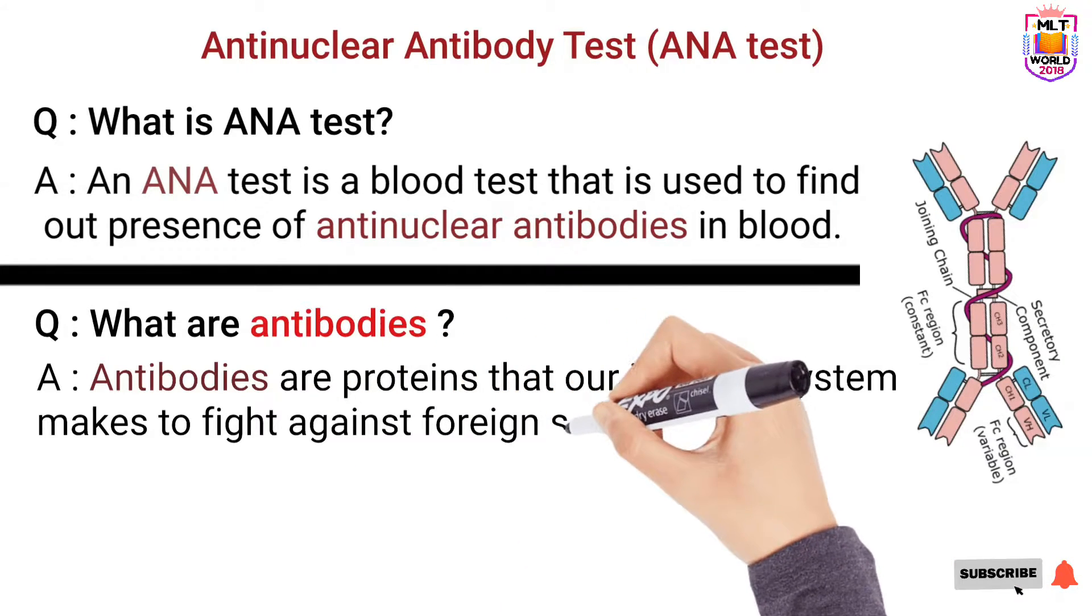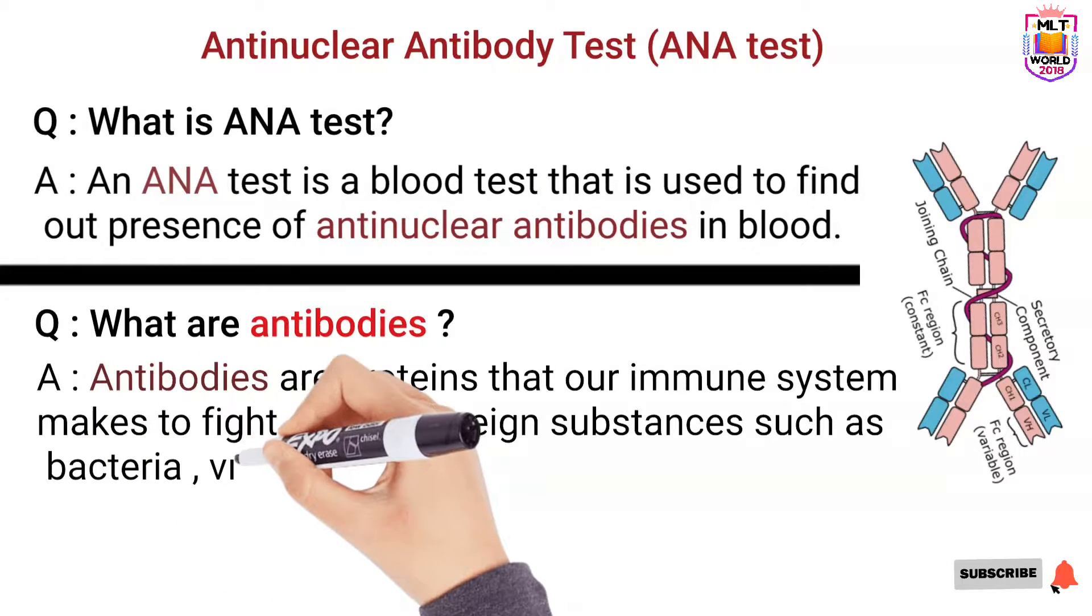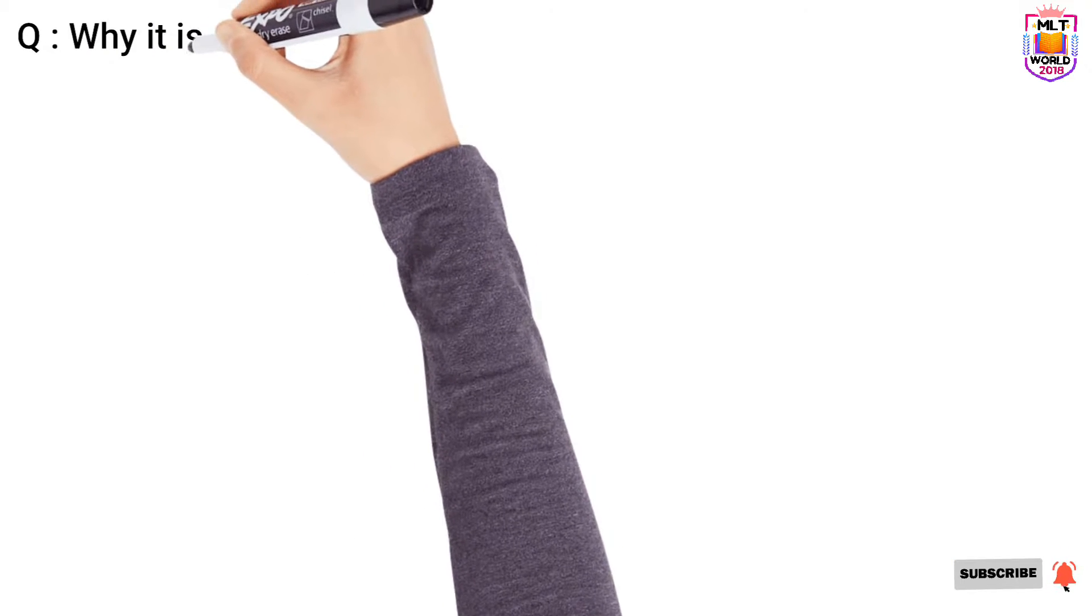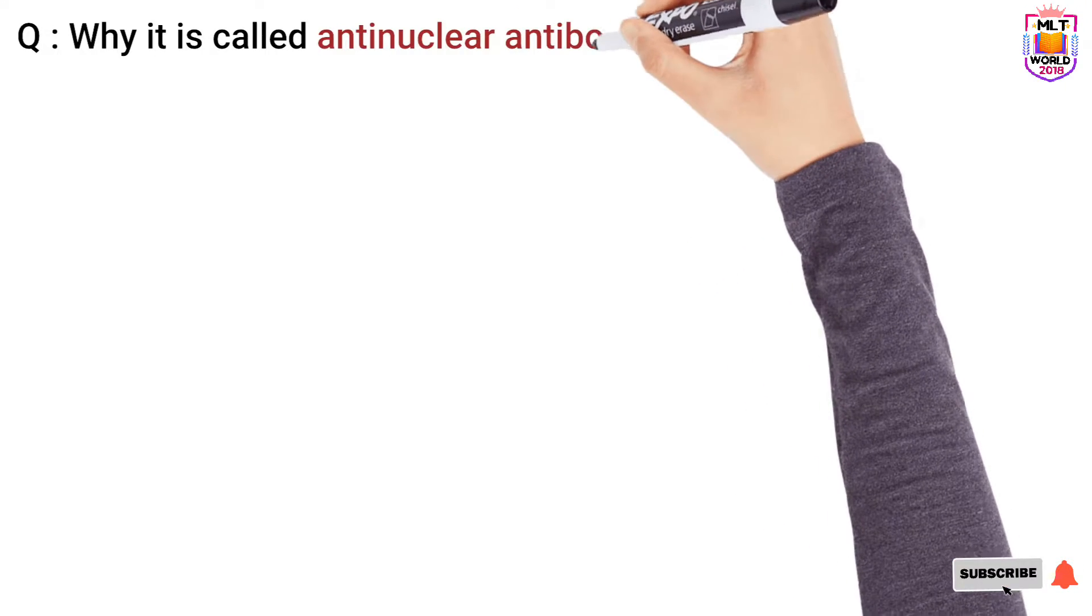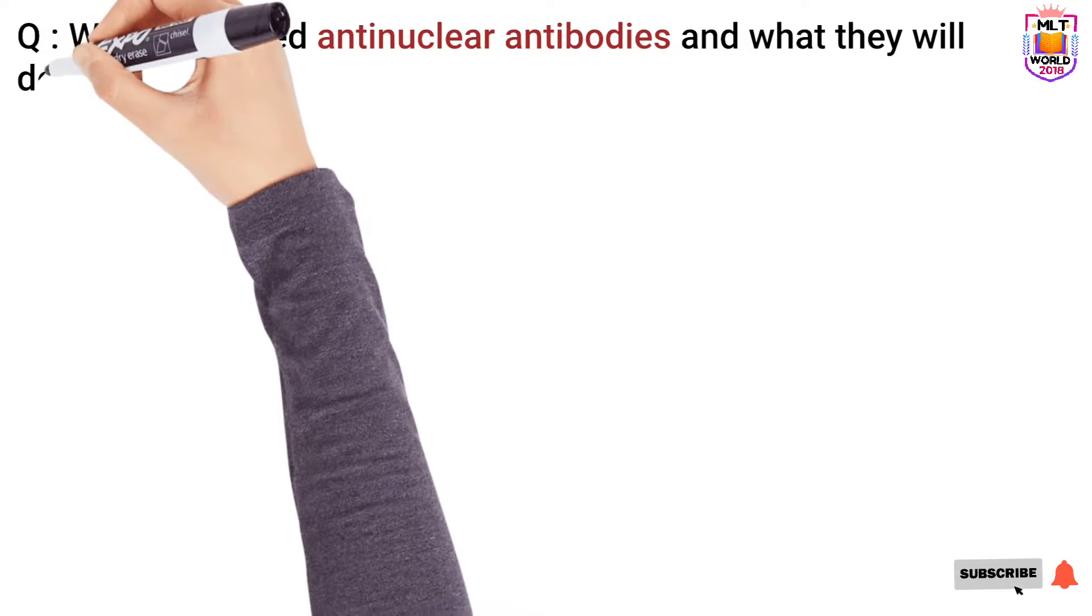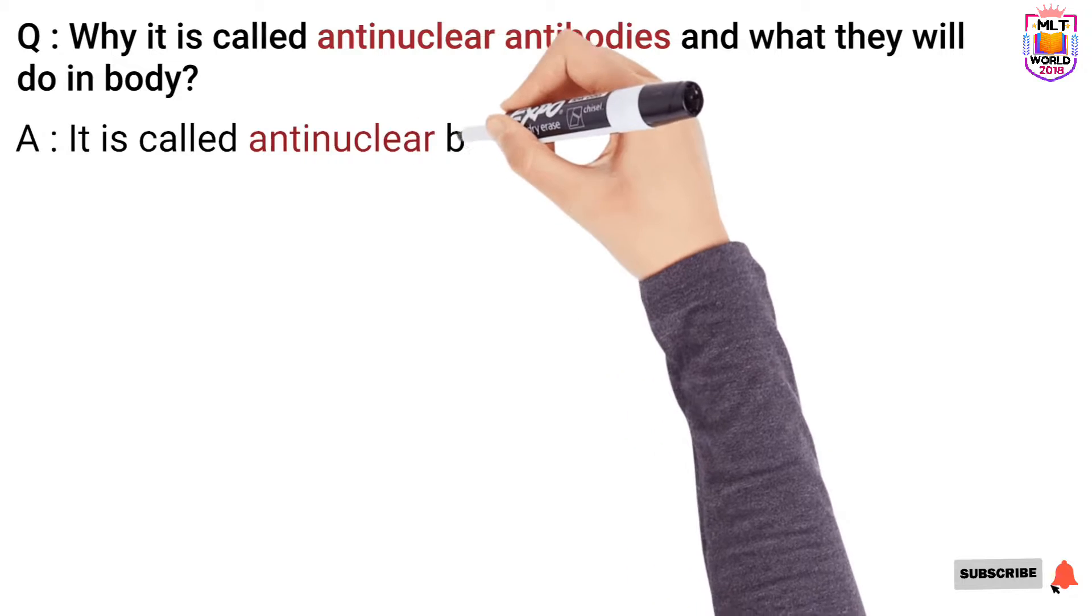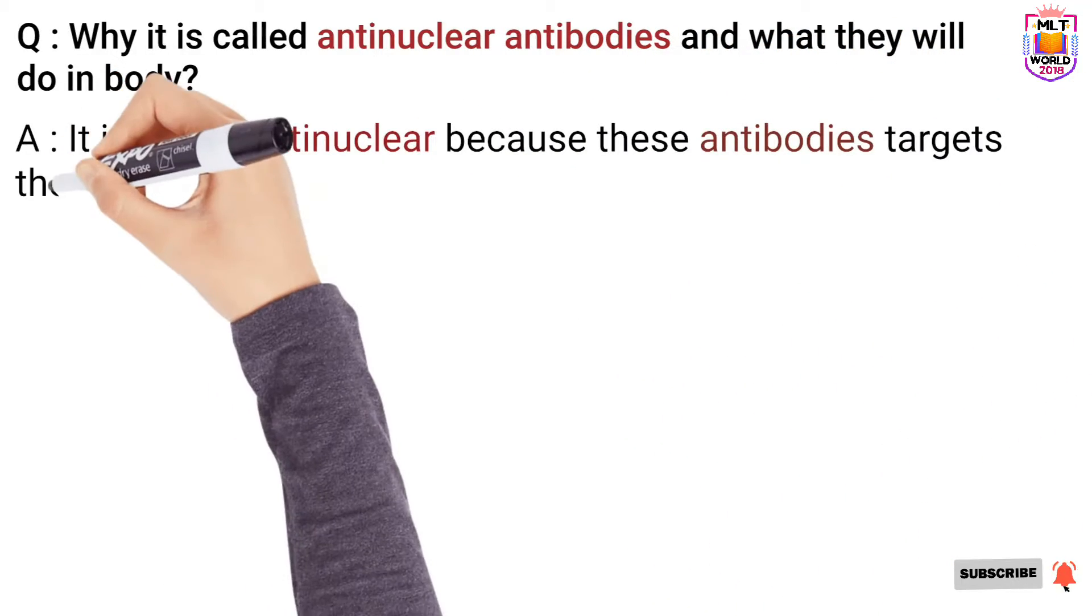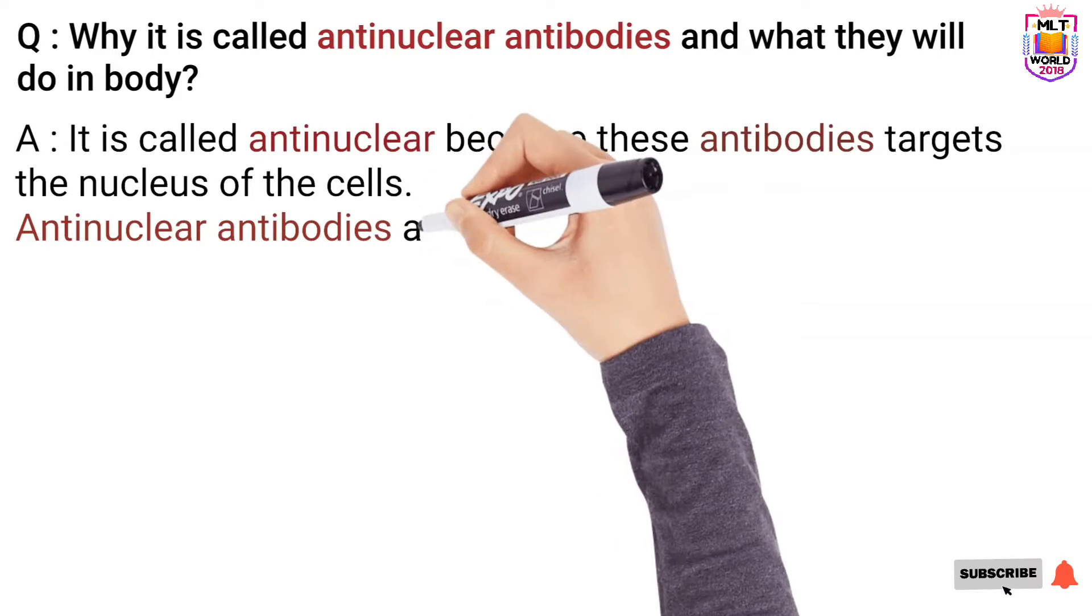So if antibodies are important, then why anti-nuclear antibodies are different from normal antibodies? Next question will come in mind that why it is called Anti-Nuclear Antibodies and what they will do. Anti-Nuclear Antibodies are called so because these antibodies will attack the cells of the organs and tissues. In the cell also they will attack specially the nucleus of the cells. That's why we call it anti-nuclear antibodies because their target is the nucleus of the cells.